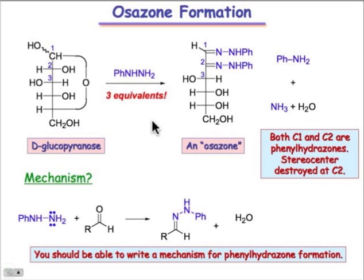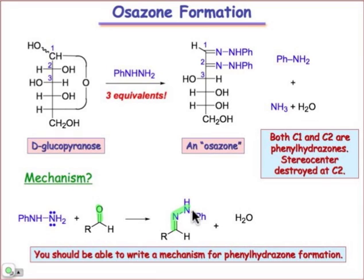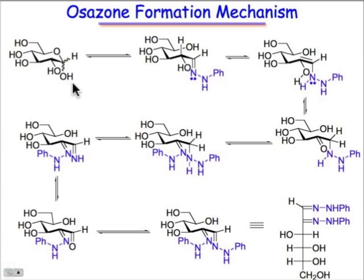As for the initial steps of the mechanism, I won't work out all the details, but you should be able to write the formation of phenylhydrazone. Phenylhydrazone formation is the reaction in which phenylhydrazine combines with the carbonyl — in this case the aldehyde — to make the hydrazone derivative. That reaction mechanism is very closely related to imine formation. Starting with the pyranose form of glucose, we can open it up into the open-chain form, and then the carbonyl at position one generates the phenylhydrazone derivative.